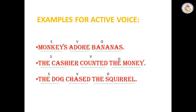All three sentences have a basic active voice construction — that is, subject, verb, and object. In the first sentence, the subject is 'monkeys', 'adore' is the verb, and 'bananas' is the object. In the second sentence, 'the cashier' is the subject, 'counted' is the action or verb, and 'the money' is the object. In the third sentence, 'the dog' is the subject, 'chased' is the verb, and 'the squirrel' is the object.